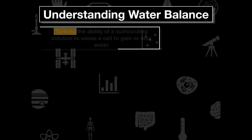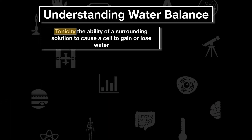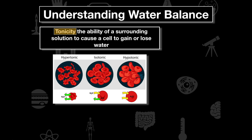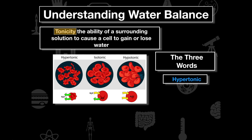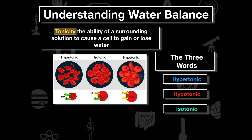For understanding water balance, tonicity is the ability of a surrounding solution to cause a cell to either gain or lose water. There are three scenarios: hypertonic, isotonic, and hypotonic. These are the three terms we need to understand in detail, because they govern the movement of water in a cell.